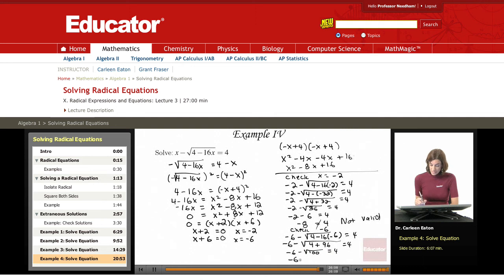Negative 6, the square root of 100 is 10, minus 10 equals 4. Negative 6 minus 10 equals negative 16, and that does not equal 4. So that is also not a valid solution.